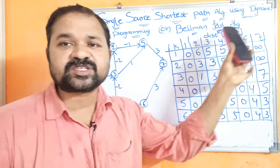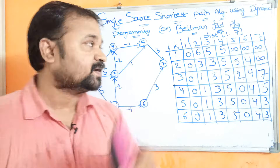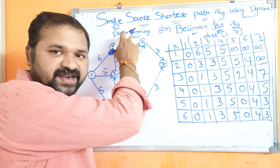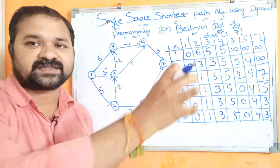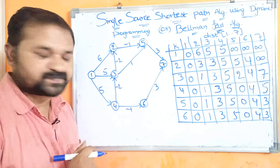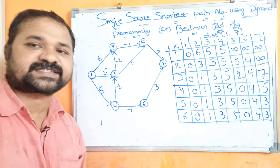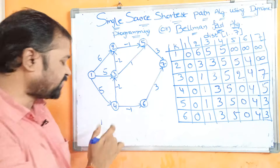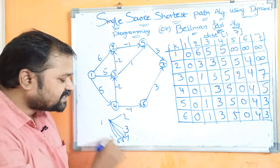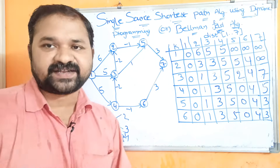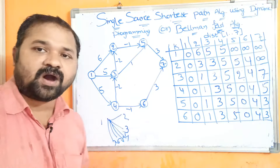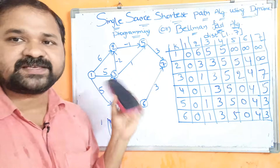Let us see what the single source shortest path algorithm is. The name itself specifies the meaning: we select one vertex as the source vertex and need to find the shortest path to all remaining vertices of the graph. For example, if we consider a graph with 7 vertices, we select vertex 1 as the starting vertex and find the shortest path from vertex 1 to vertices 2, 3, 4, 5, 6, and 7.